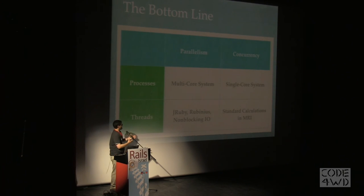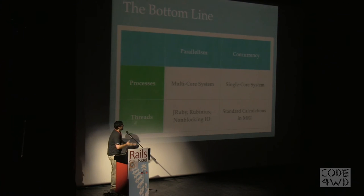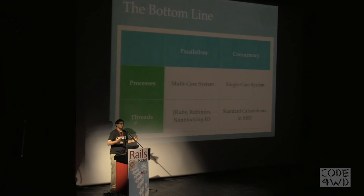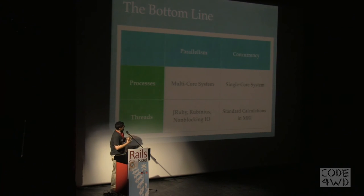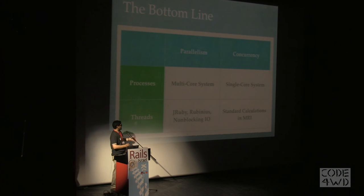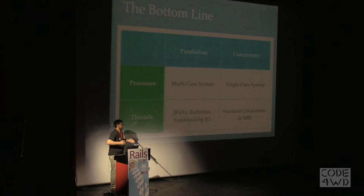As Rubyists, a lot of people tend to conflate processes, threads, parallelism, and concurrency — but it's not accurate. Processes are theoretically parallel if you have the cores to support it, but on a single-core system you can have as many processes as you want and only one will run at a time, because you need the hardware to support that software concept. In terms of threads, they're usually concurrent when running Ruby code in MRI. But if you're running JRuby or Rubinius, those implementations support actual parallel execution of threads.